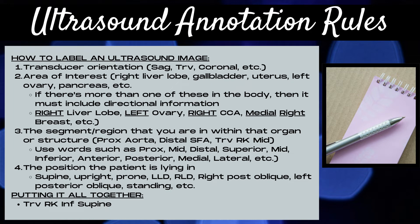Lastly, when annotating a general ultrasound image, you want to specify the position that the patient is lying in. Is your patient supine or prone? Are they upright, left lateral decubitus, or right lateral decubitus? Or are they in a right posterior oblique, left posterior oblique, or standing up? Positioning is important to many types of general ultrasound, especially when trying to show whether anything moves with a change in position — such as when evaluating the gallbladder, where you must always include images in two different patient positions to demonstrate whether gallstones are hiding in the gallbladder neck or whether sludge and gallstones are mobile with a change in patient position.